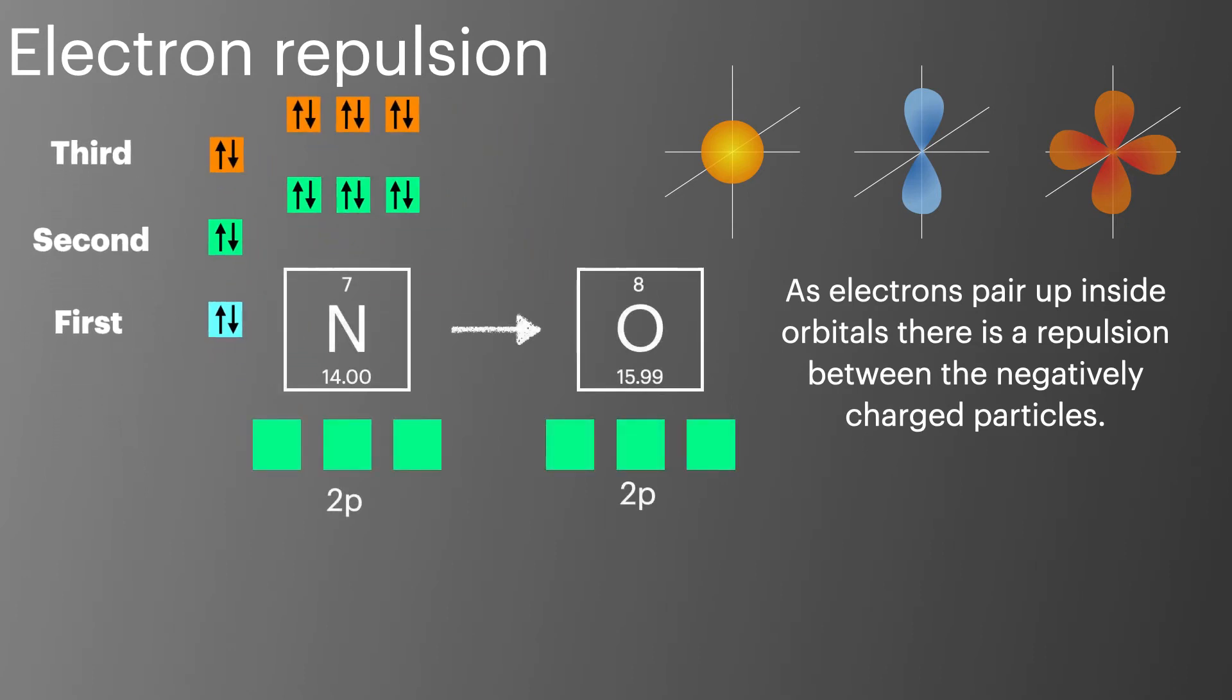This is most notable when we go from nitrogen to oxygen. Nitrogen places a single electron in each of its 2p orbitals whereas oxygen fills each of the 2p orbitals before pairing its last and highest energy electron in the first of the p orbitals. This is now easier to remove because of the repulsion between the two electrons. So as electron repulsion increases the ionisation energy decreases.